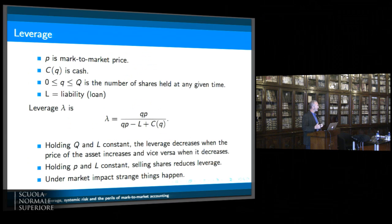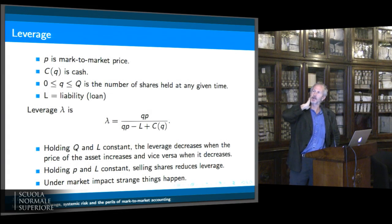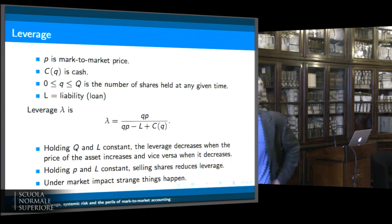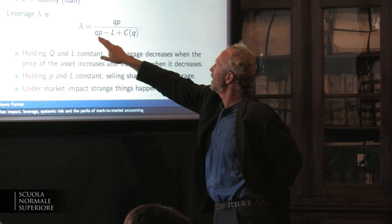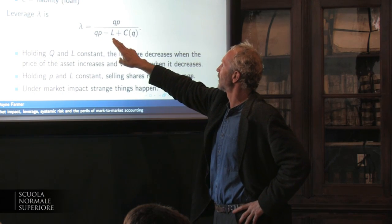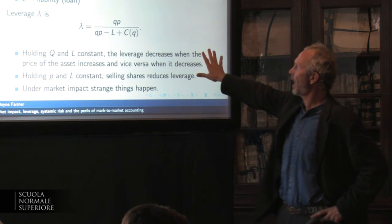How does that interact with leverage? I'm going to compare leverage when computing it as you go along under mark-to-market valuation versus using a market impact valuation. First I'll write down the standard formula for leverage: it's the value of your position divided by the value of your position minus the loan you took out plus whatever cash you have on hand. A couple of properties of this are important. If you hold the total size constant, then leverage decreases when the price of the asset increases — if prices go up, your leverage goes down.